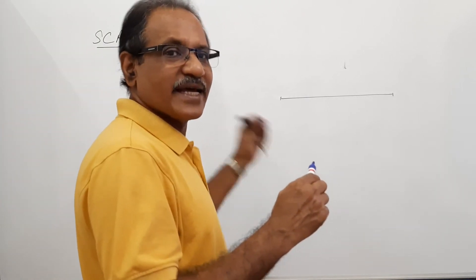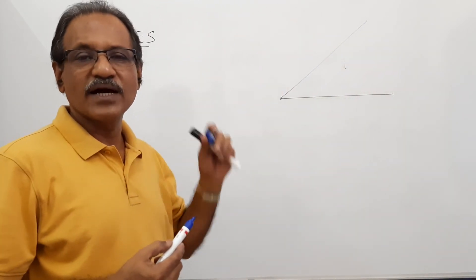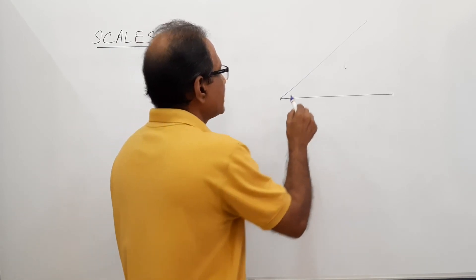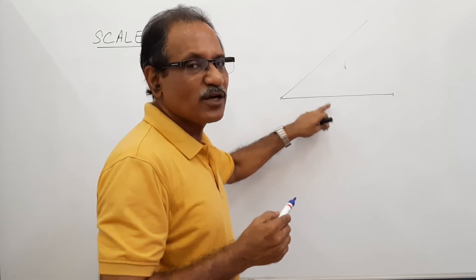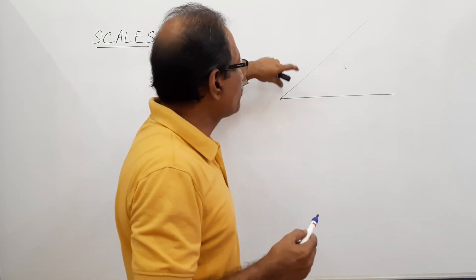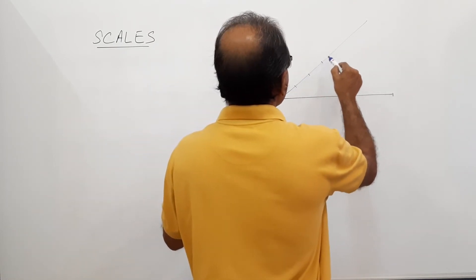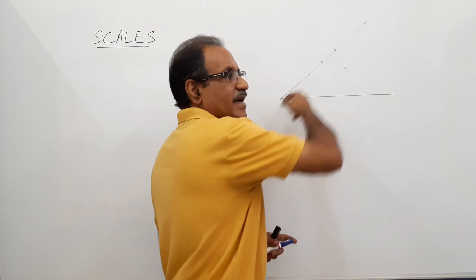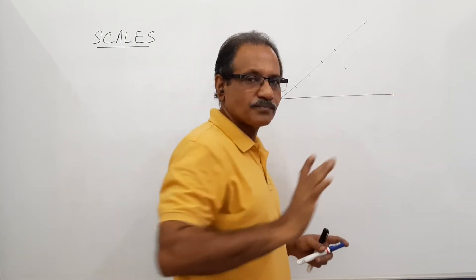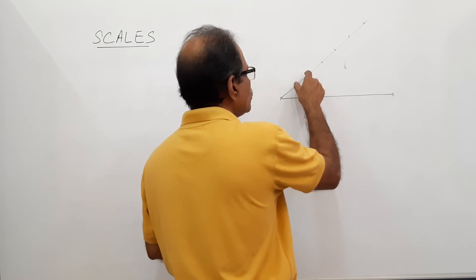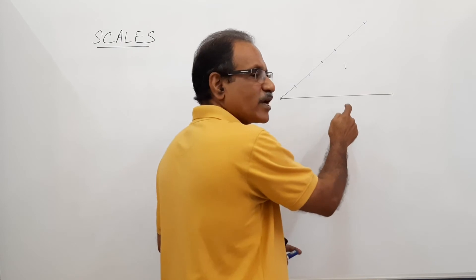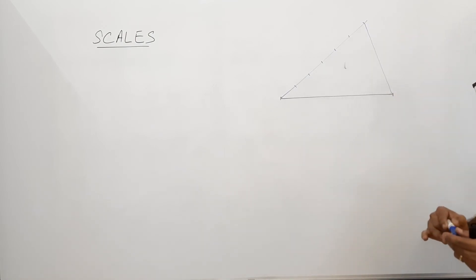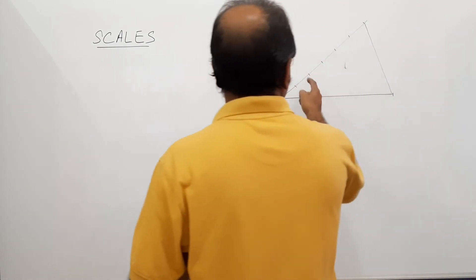Here is the method: draw any line at any angle from one end. Take any distance in your divider and place it 6 times along that line — once for each part you want. So if you want to divide into 6 equal pieces, mark 1, 2, 3, 4, 5, 6 along the angled line. If you want 4 equal parts, mark 4 times; 3 equal parts, 3 times. Then join the last point back to the other end of the original line by a straight line.